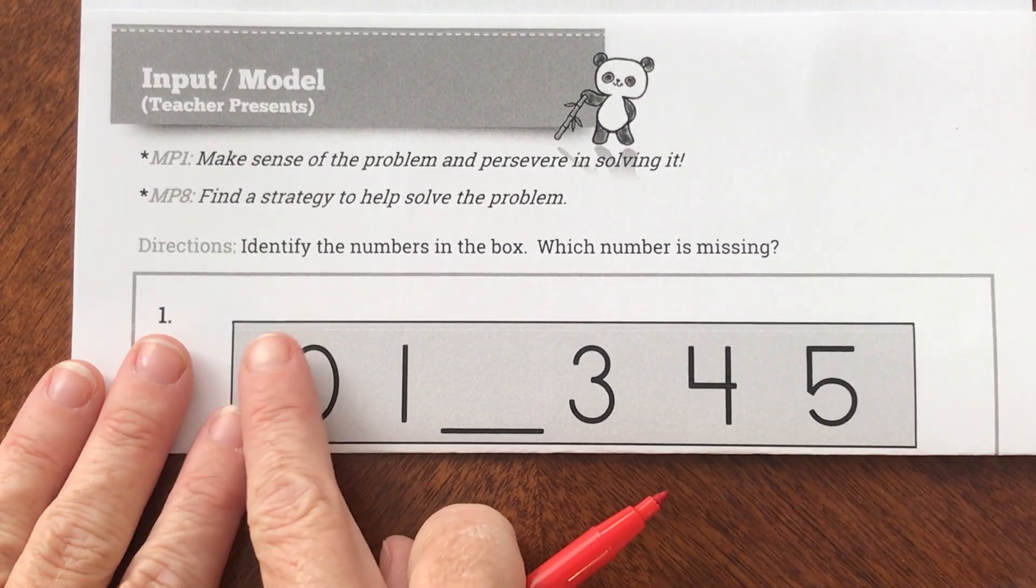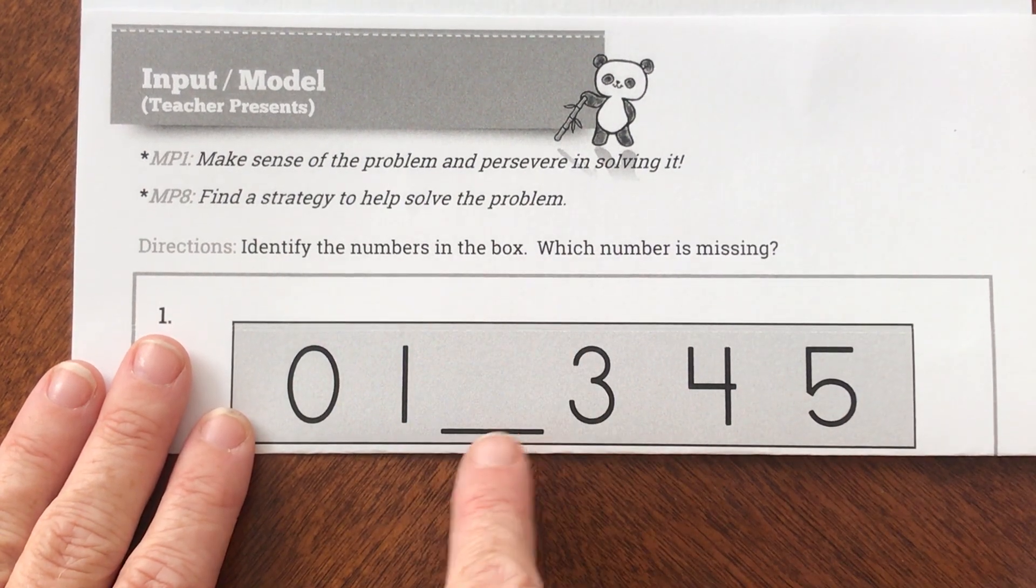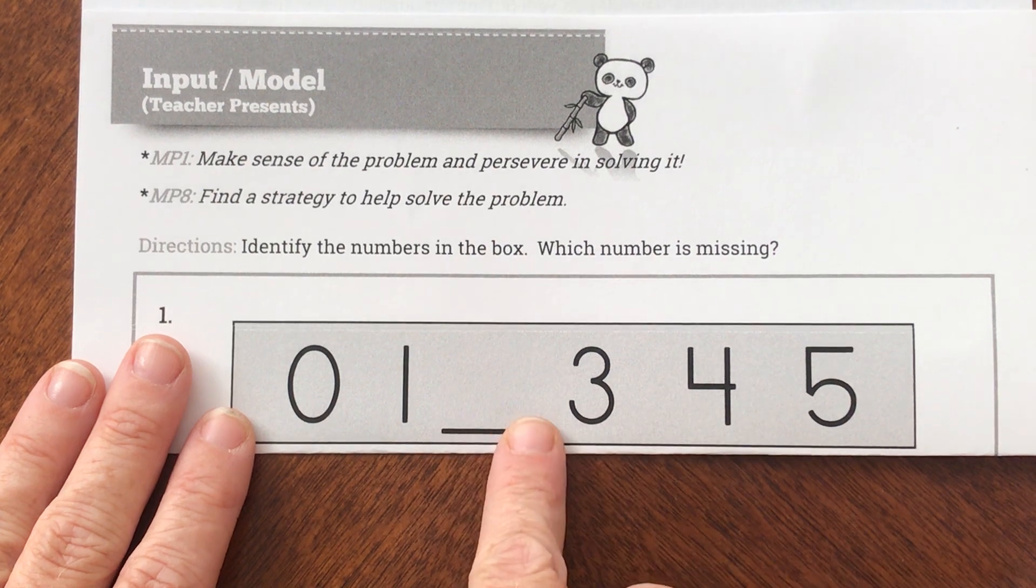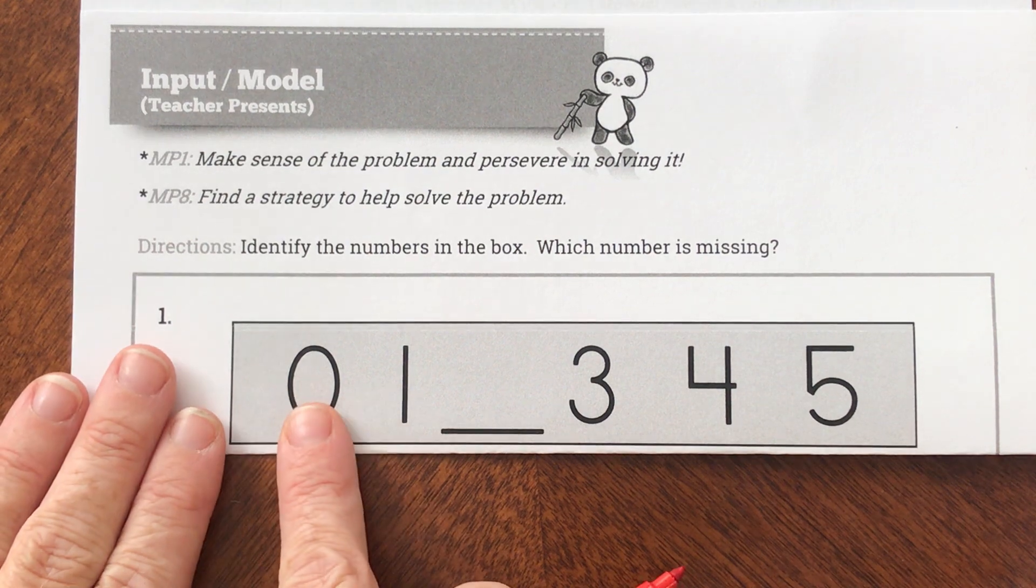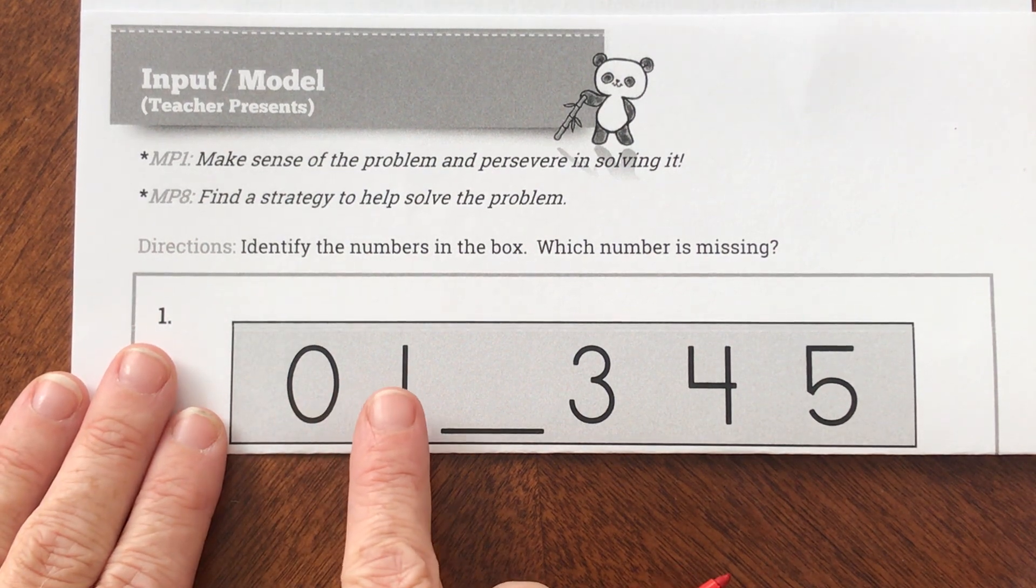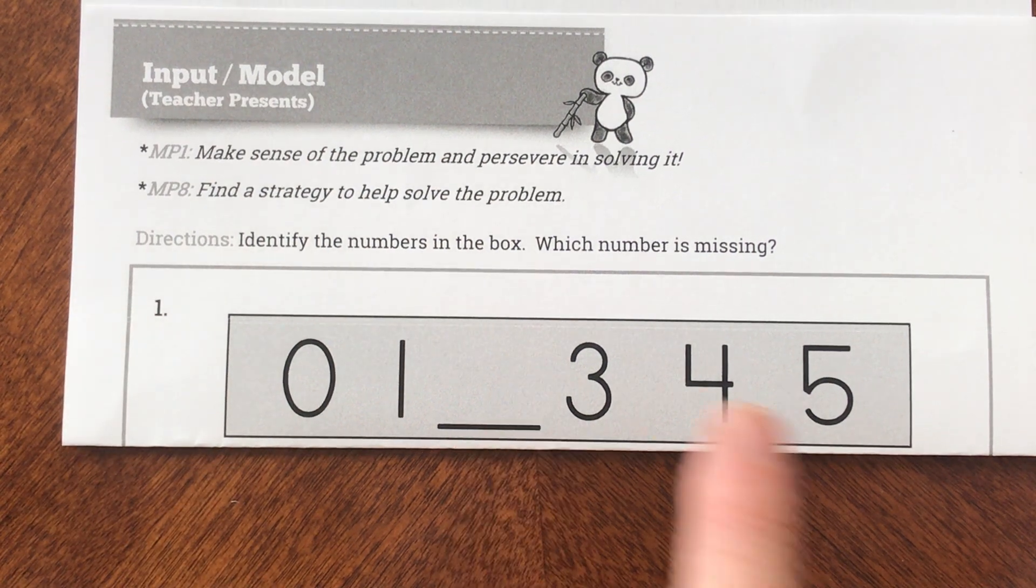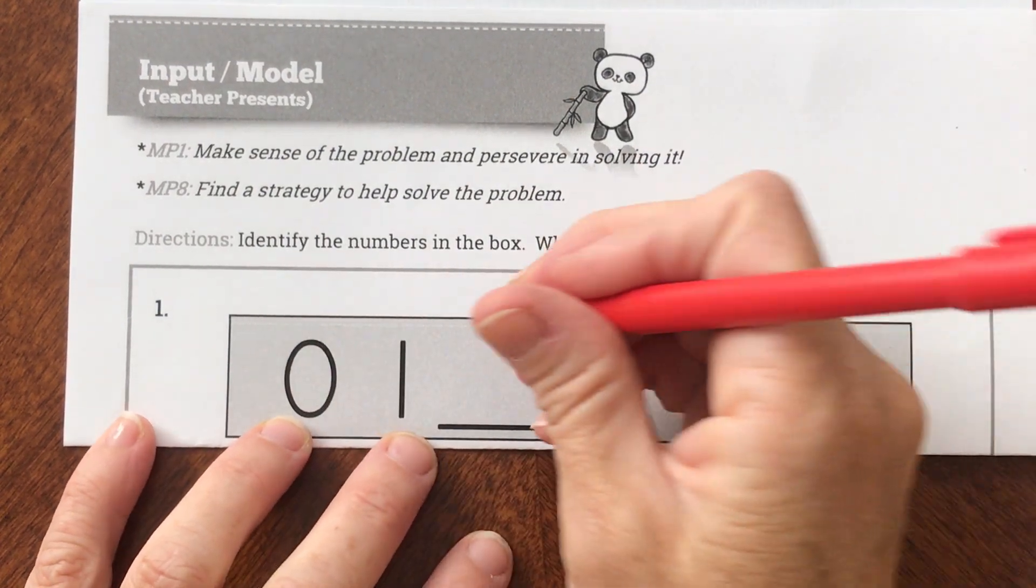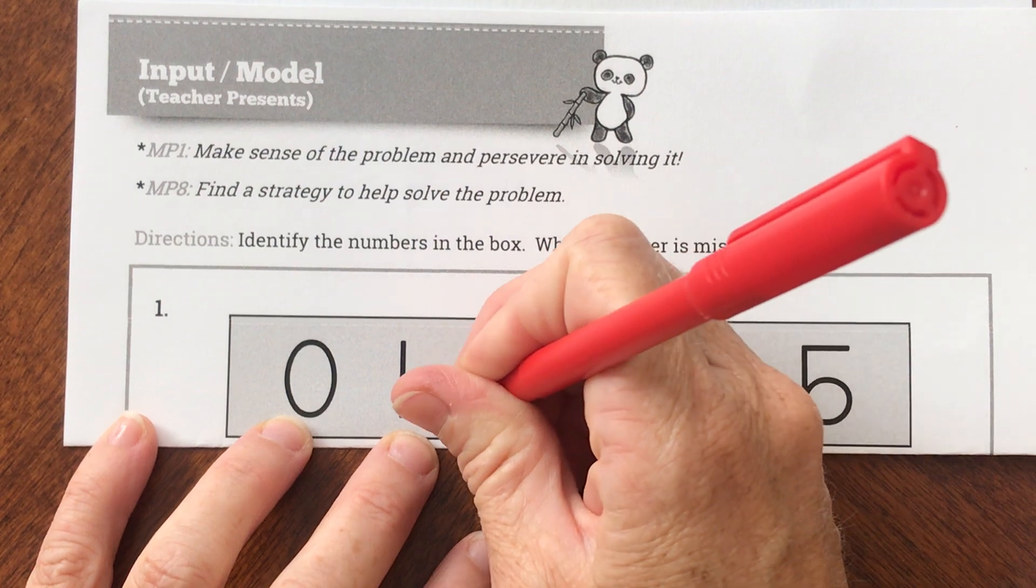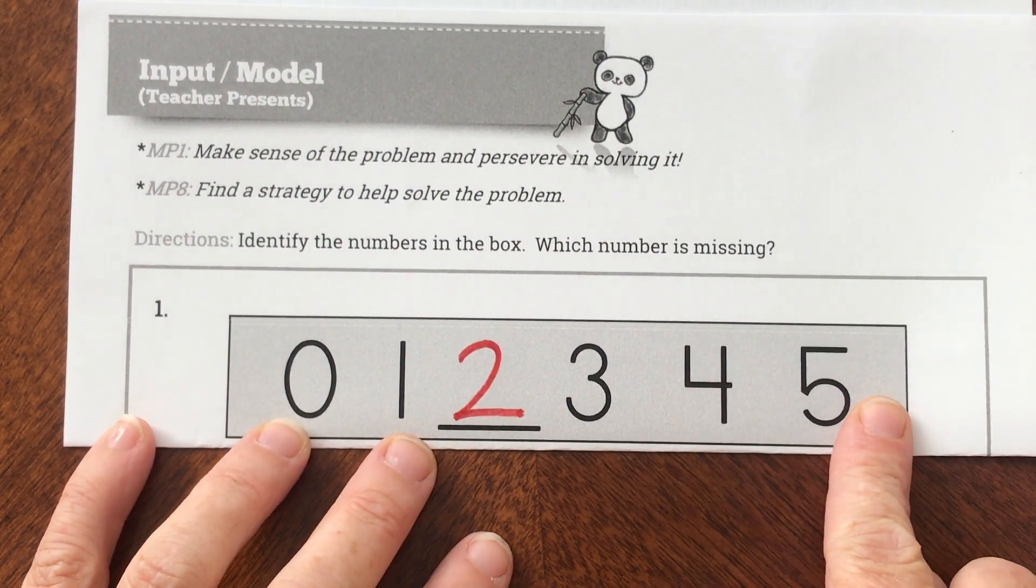It wants me to identify the numbers in the box and decide which number is missing. I need to fill it in. If I know my numbers in order, I know that zero, one—what comes after one? I could use this number line to help me if I need to.